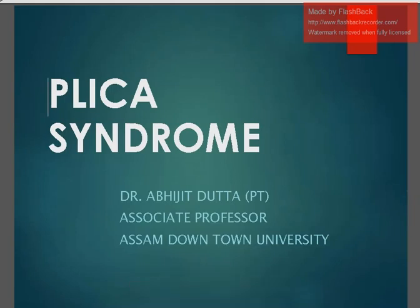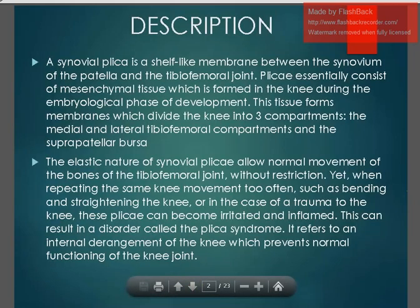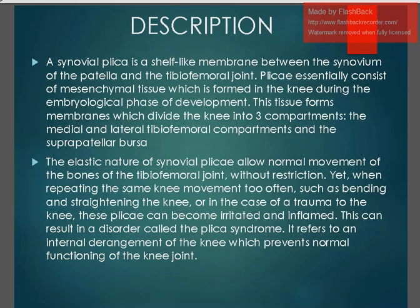Today let us see another syndrome or condition around the knee joint known as plica syndrome. A synovial plica is a shelf-like membrane between the synovium of the patella and the tibiofemoral joint. It essentially consists of mesenchymal tissue formed in the knee during the embryological phase of development. This tissue forms membranes which divide the knee into three compartments: the medial, the lateral tibiofemoral, and the suprapatellar bursa. The elastic nature of this synovial membrane known as plica allows normal movement of the bones of the tibiofemoral joint without restriction.